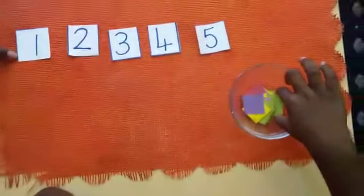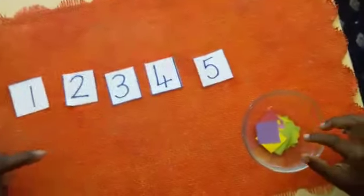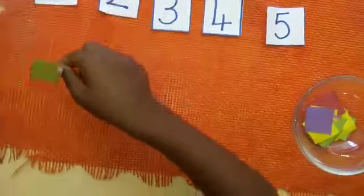Which number is this? 1. So we're going to put 1 counter. Put 1 counter here for me. There we go. Beautiful.